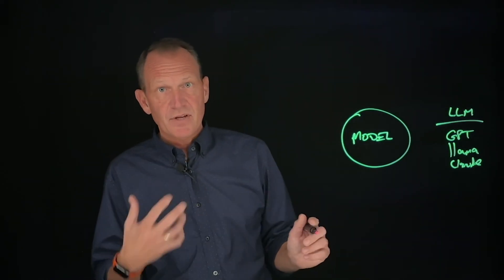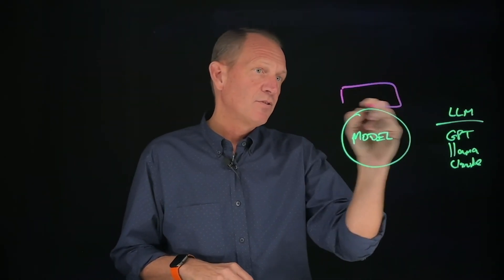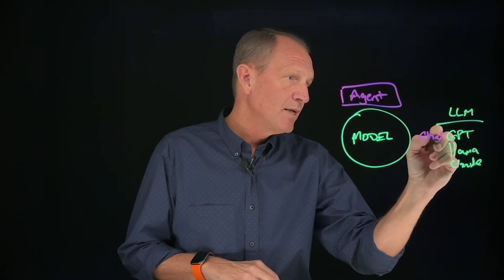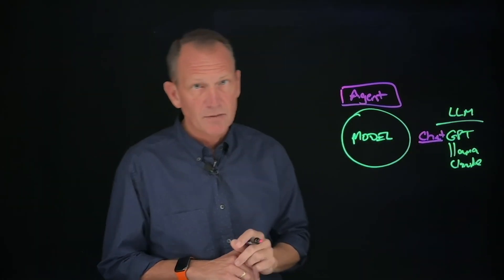Now we don't interact with the model directly. We have to have an interface to it. And that interface is called an agent. And an agent, for example, ChatGPT is the agent for GPT from OpenAI.